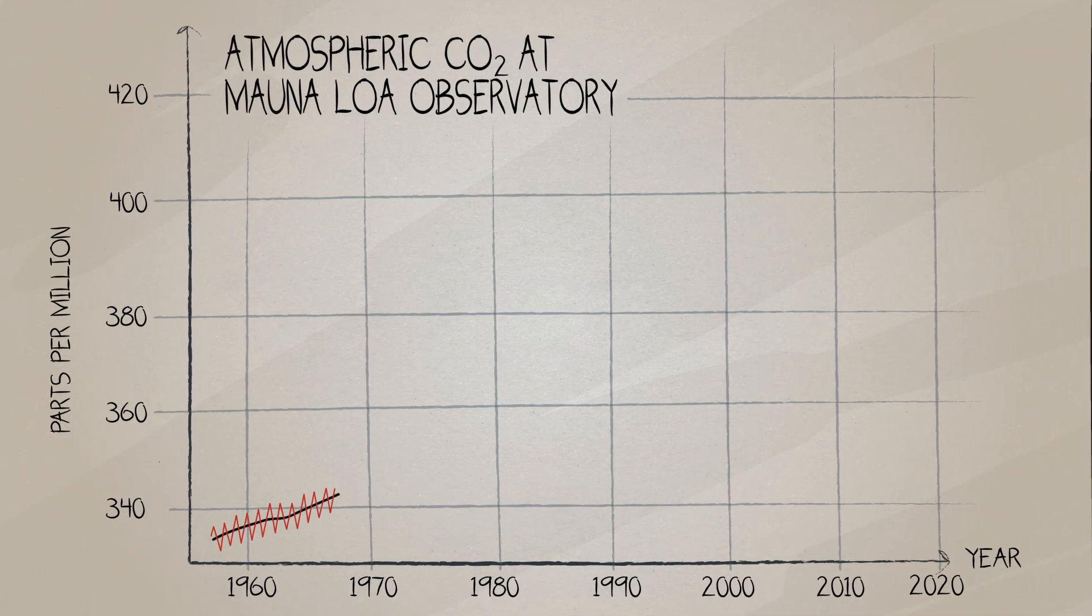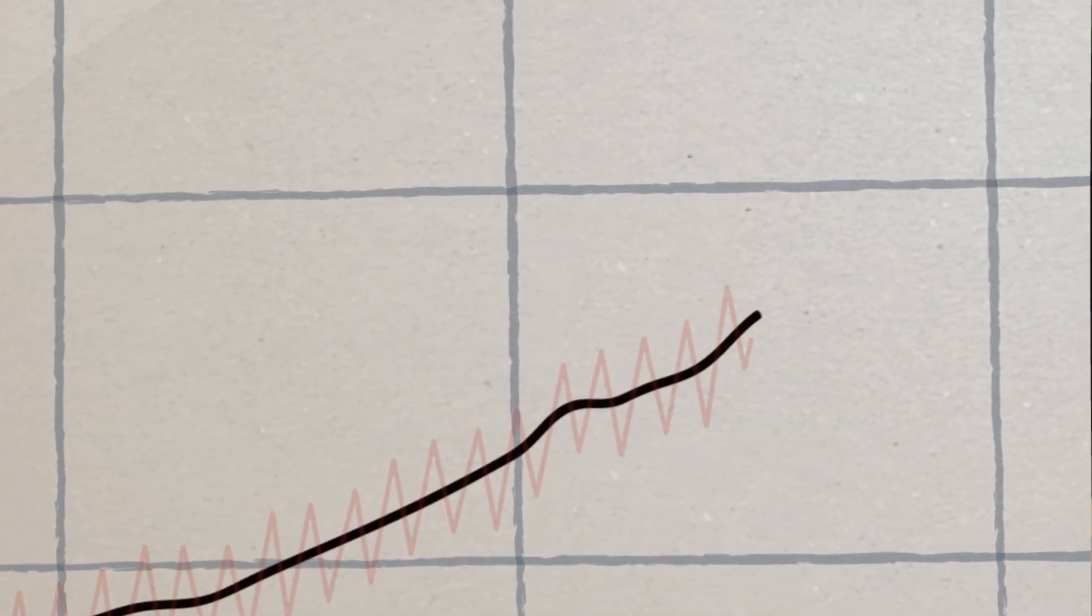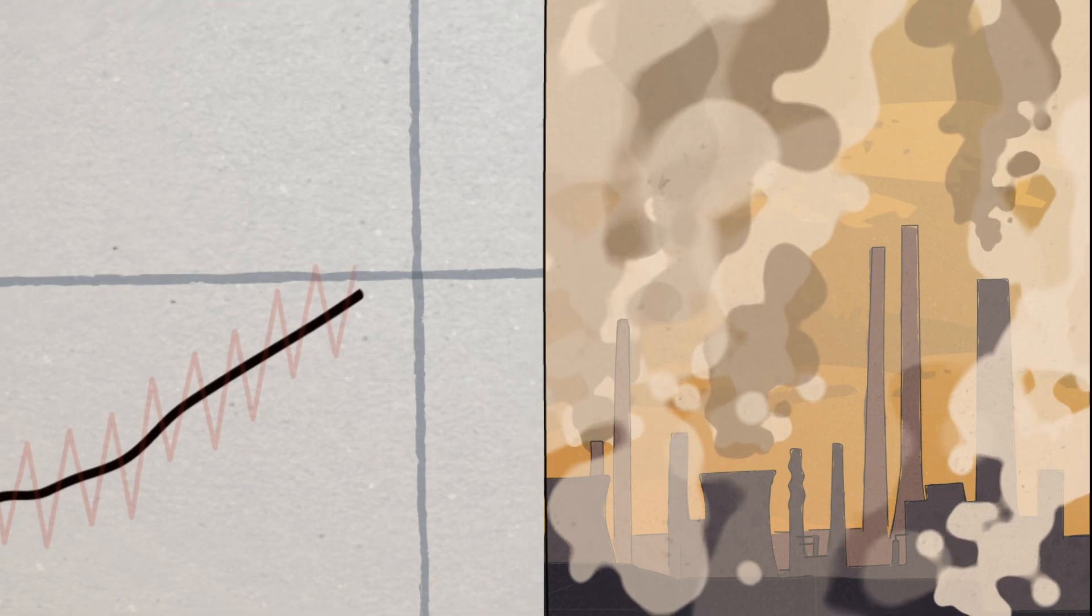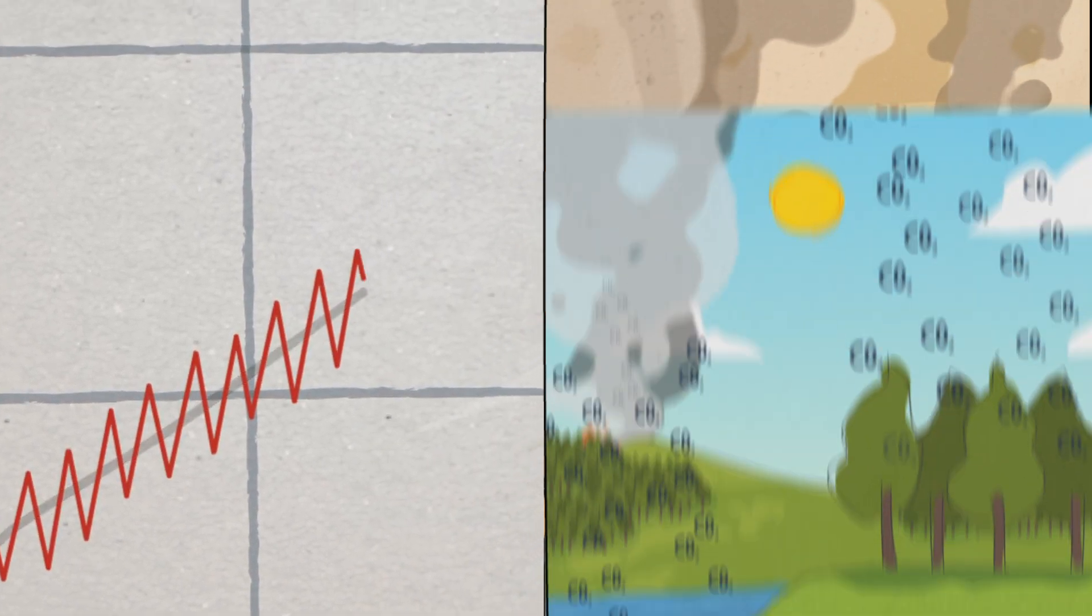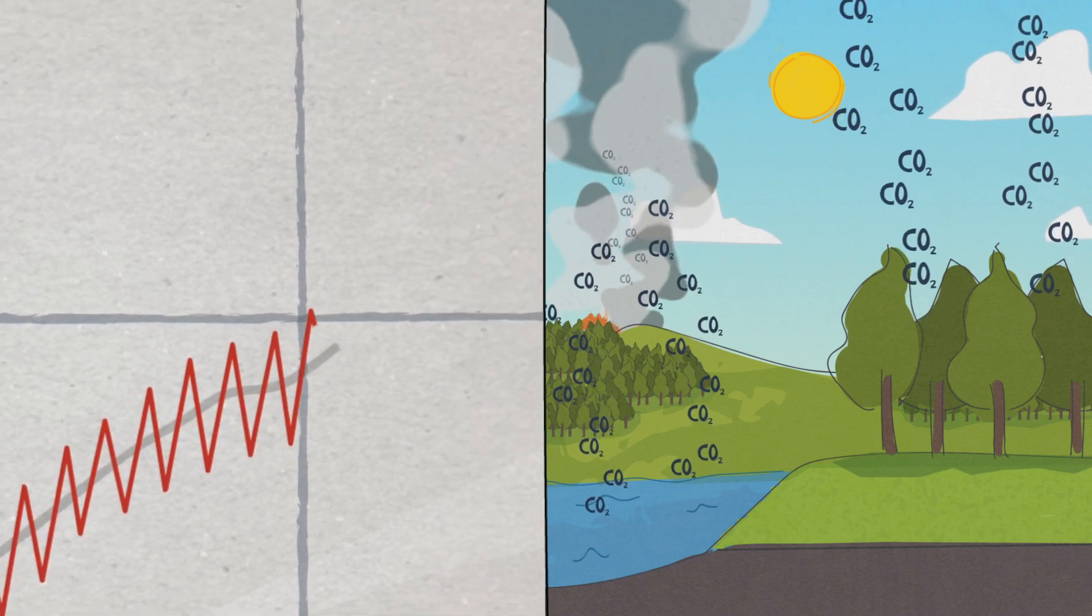This graph shows two pieces of information. The black line depicts the overall upwards trend caused by human activities. The red zigzag shows the increases and decreases caused by the Earth's natural carbon cycle.